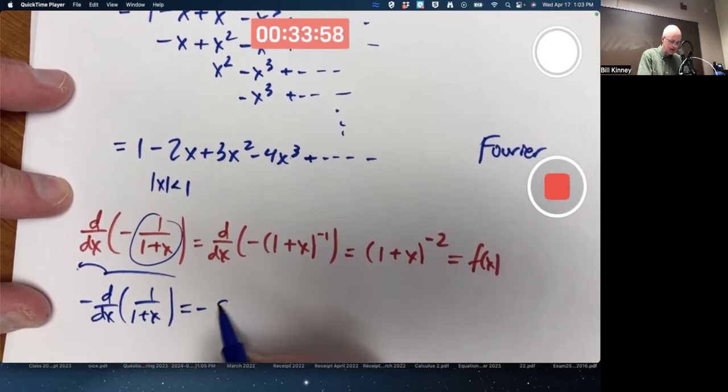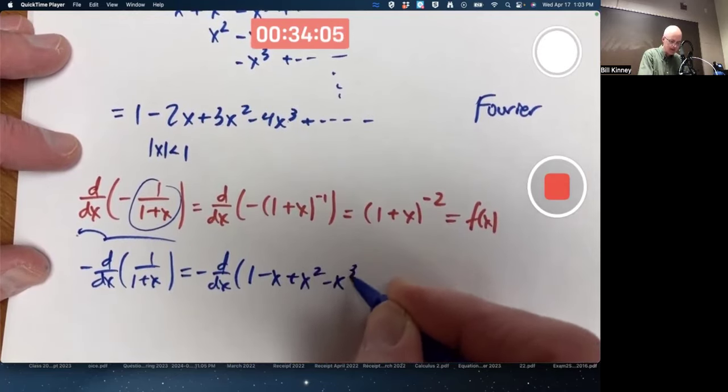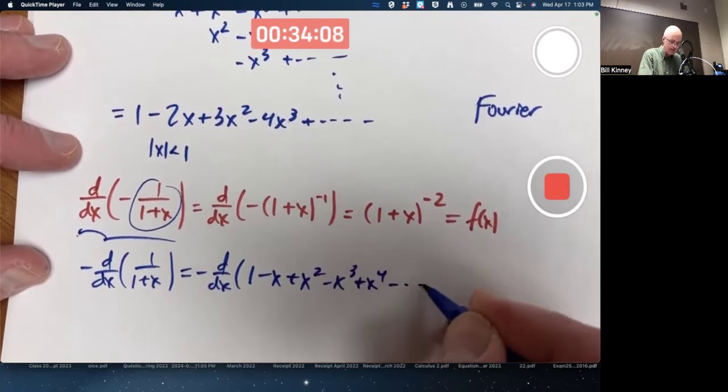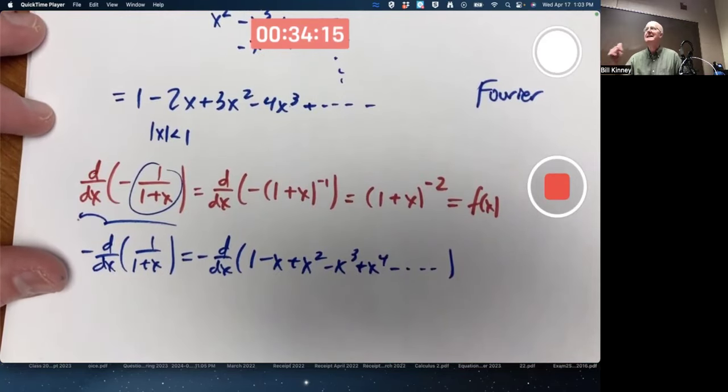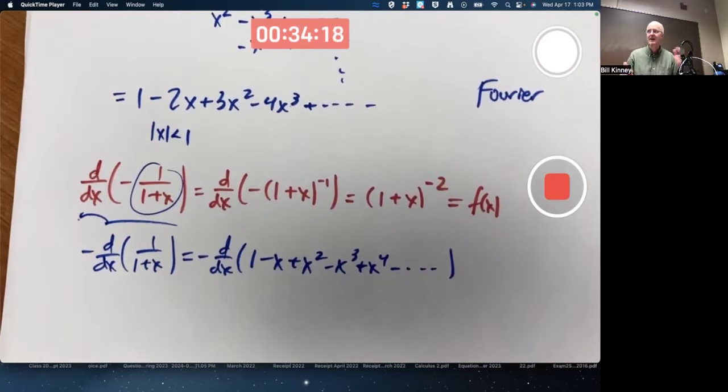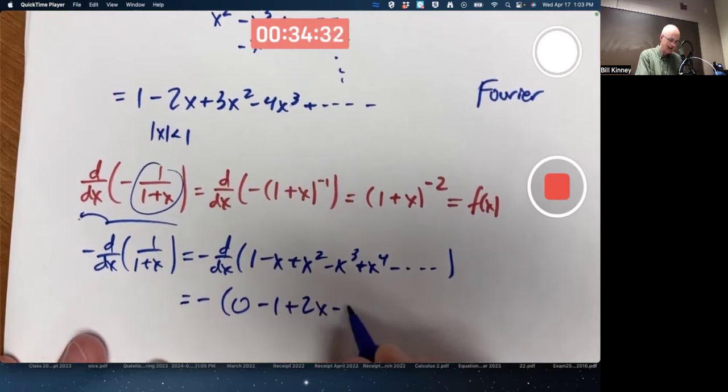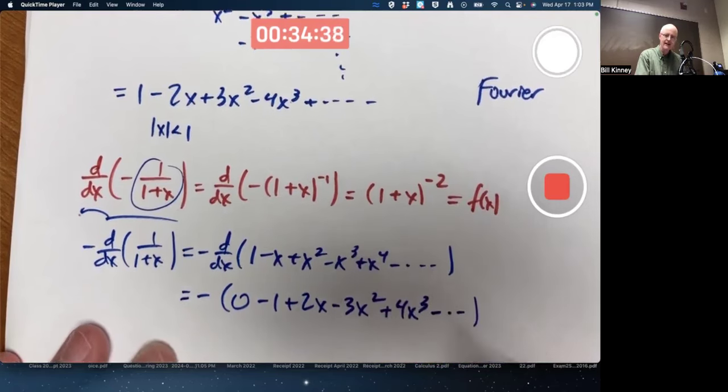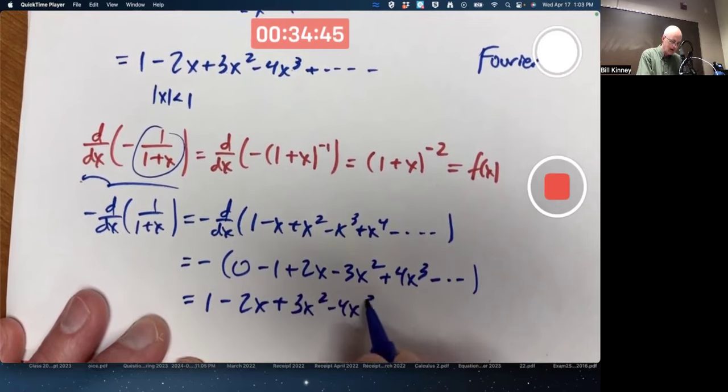So this should be the negative of the derivative of 1 over 1 plus x, which will be the negative of the derivative of substitute the series in 1 minus x plus x squared minus x cubed plus x to the fourth, etc. Can I differentiate an infinite series term by term? Yes. At least for values of x in the interior of the interval of convergence between negative 1 and 1 in this case. So differentiate that. And then after doing that, multiply everything by negative 1 and get the exact same answer we got before.